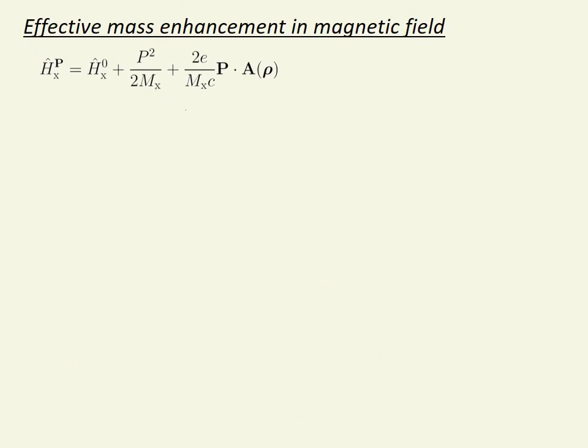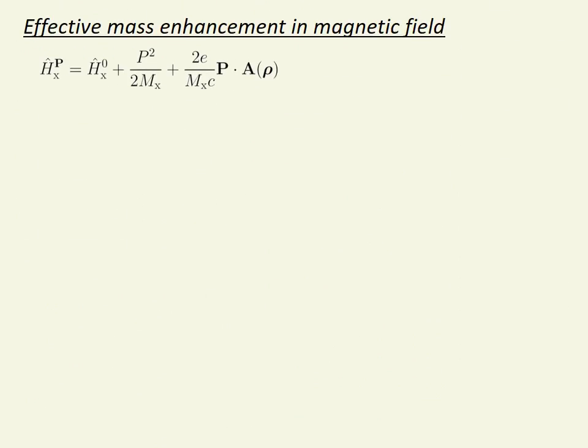Our main result is the calculation of the exciton effective mass renormalization due to the magnetic field. To calculate this effect, we introduce the exciton in-plane center of mass momentum, p, as a small parameter. We first solve the Schrodinger equation for p equals zero, the results for which were shown on the previous slides.